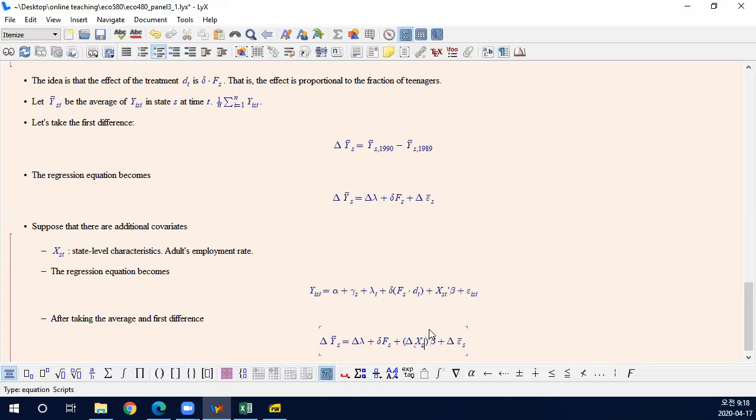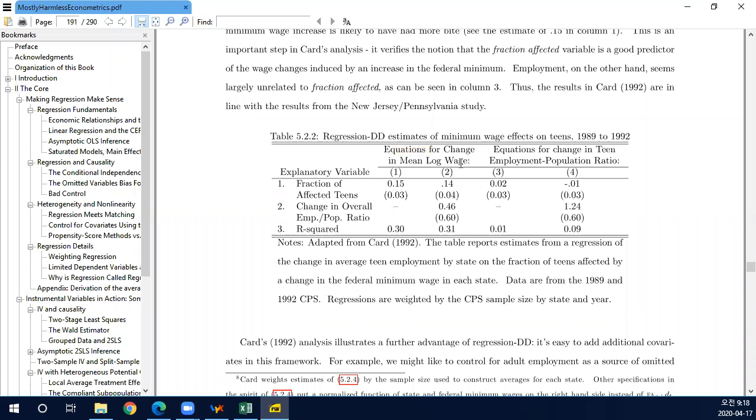So between 1989 and 1990, what is the change in the adults employment rate, and then that would affect teenagers wage. So the first two models consider wage and the last two models consider employment rate, teen employment rate. And the second and fourth models consider adults employment rate as a covariate.